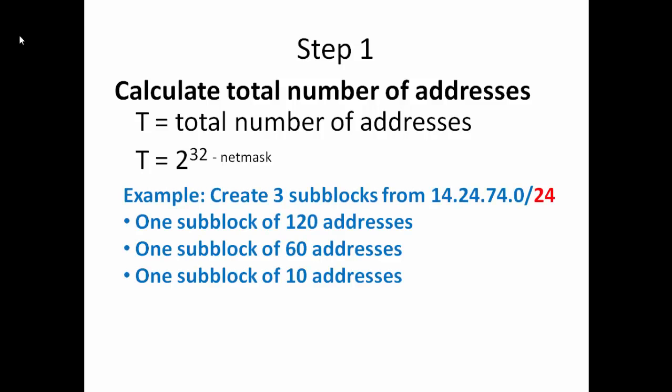Here's an example we will work with today. We're going to create three subblocks starting from the address 14.24.74.0/24. One subblock will be 120 addresses, one subblock will be 60 addresses, and one subblock will be 10 addresses. So T, or the total number of our addresses, will equal 2 to the 32 minus that 24 prefix.